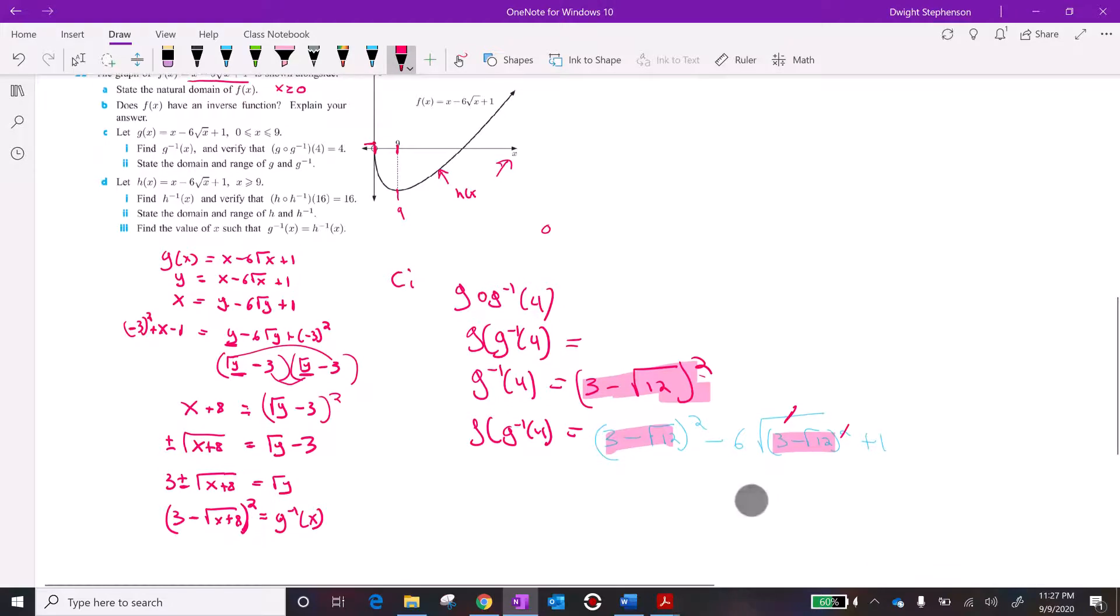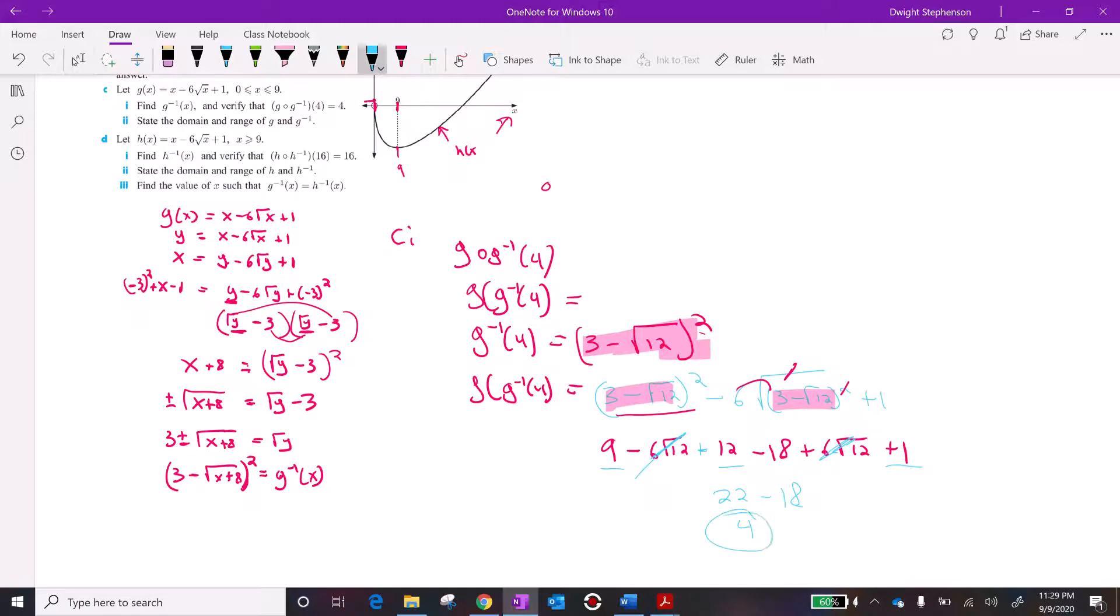These are going to cancel. This cancels with that. If you FOIL this out, you're going to get 9 minus 6 square root of 12 plus 12. After this bracket's gone, if you distribute the negative 6, you get negative 18 plus 6 square root of 12 plus 1. The square root of 12s here are going to cancel. 9 plus 12 is 21, plus 1 is 22, minus 18 is 4. So g of g inverse of 4 is 4. So yes, that works.